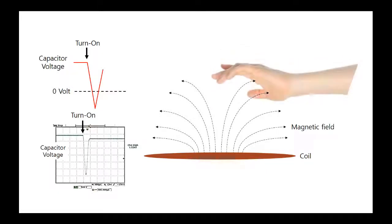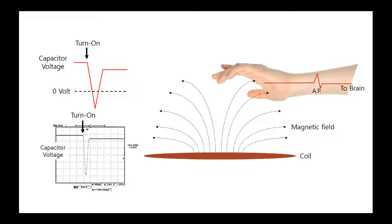When this magnetic field passes through a living body, an electric current is induced by electromagnetic phenomena. If this electric current is large enough to change the membrane potential of cells — that is, depolarization of the cell — an action potential is generated from mechanoreceptors and nerves. These action potentials are transmitted to the brain along the afferent nerve, and the human perceives it as a tactile sense.